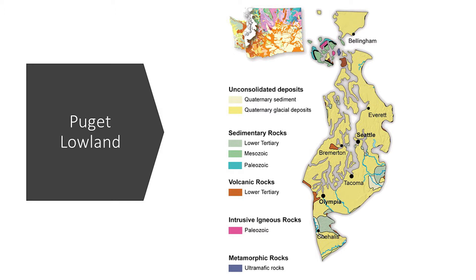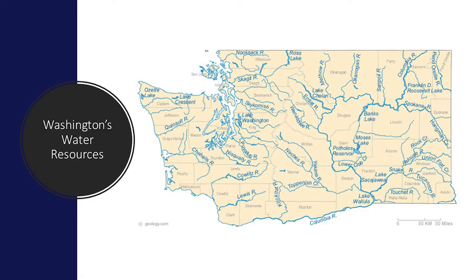Southern areas of the Puget Lowland are partially covered with ancient lava flows, and in the north, the San Juan Islands are composed of metamorphic rocks that are over 160 million years old. As the glacier moved, it also created many long and narrow hills. Underneath the glacier, the melting water was at work carving valleys like the Puget Sound, Lake Washington, Lake Union, Lake Taps, and Lake Sammamish.